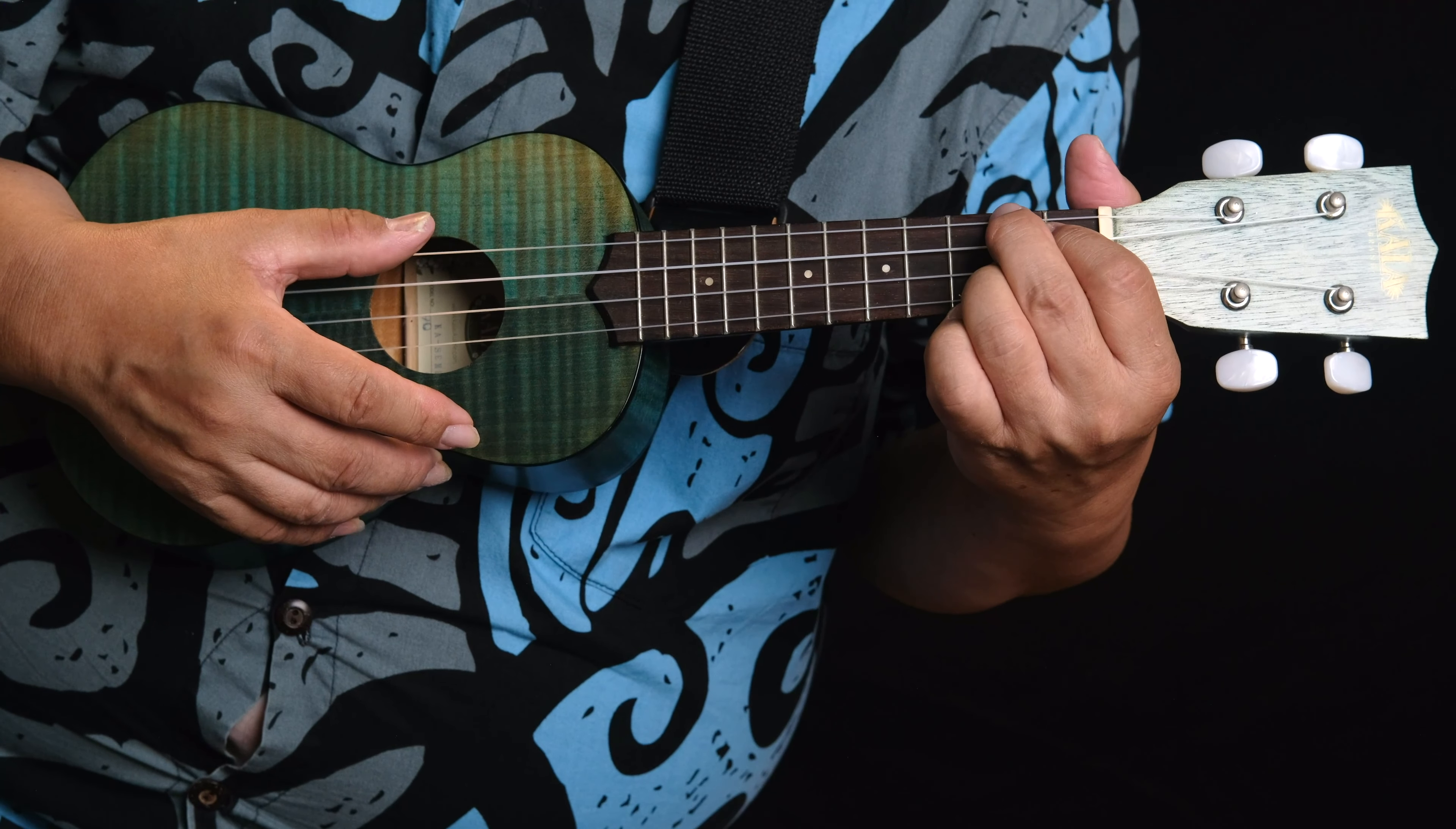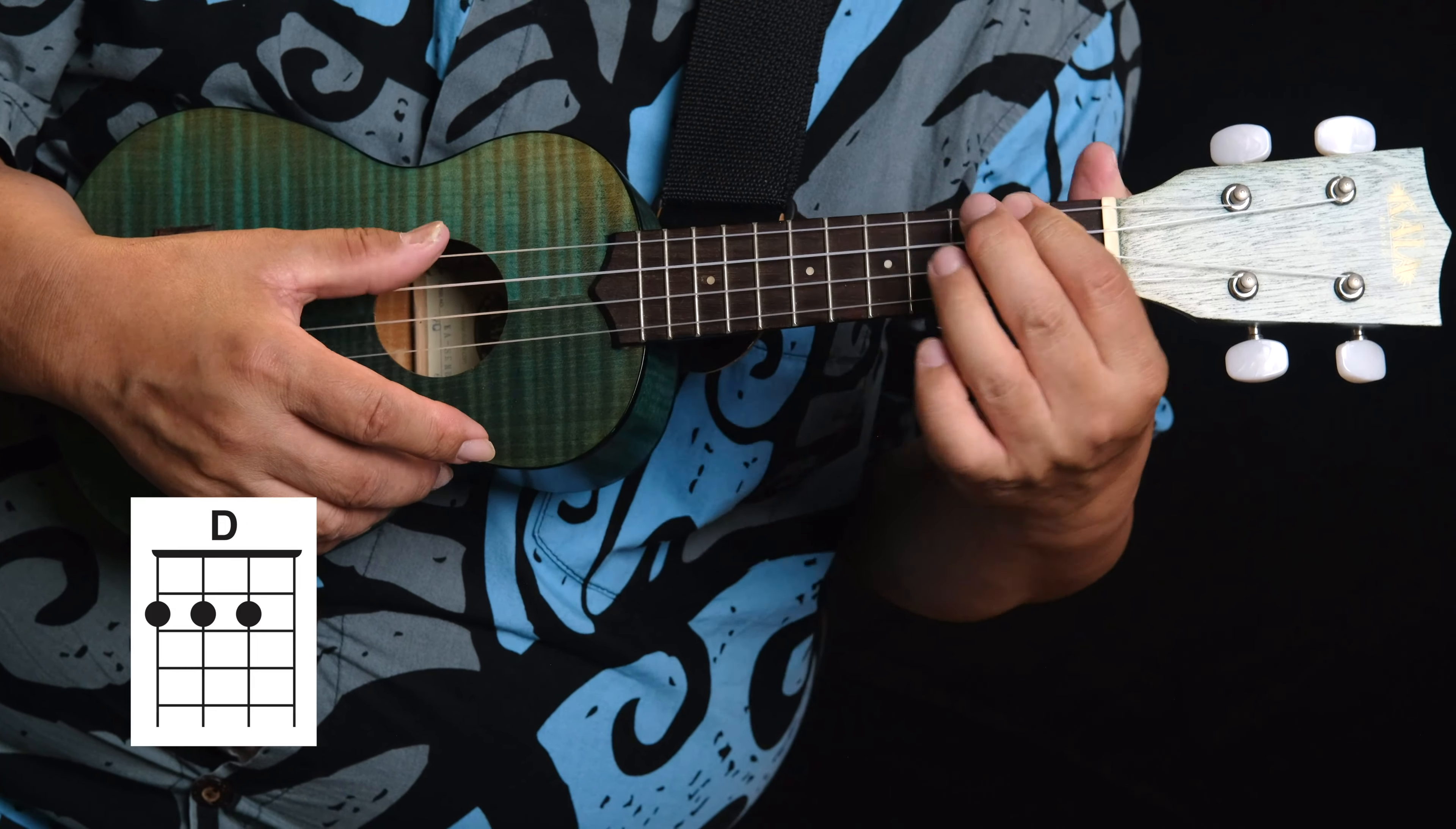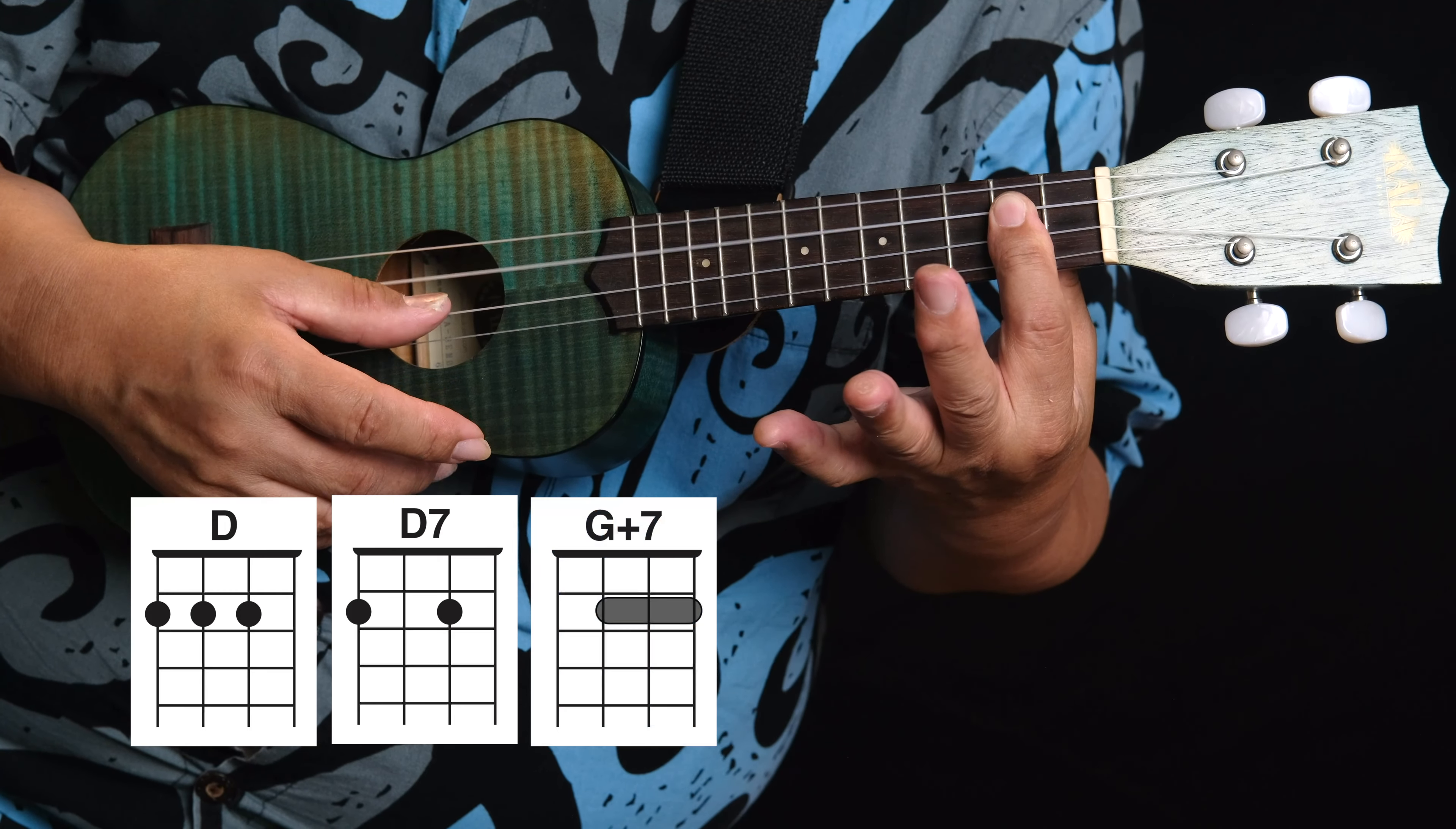We're going to need 11 chords. So these are the ukulele chords. So you're going to need a D. You can hold it like this, like that, one finger, any way you want. Second chord you need is a D7. Third chord is a G+7, or G major 7. I just use one finger.